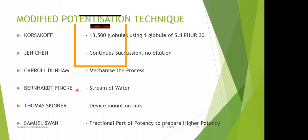Thomas Skinner developed a device — a smaller one which can be mounted on the sink — known as automatic potentization. Samuel Swan made the concept that you do not need to prepare each potency individually. You can take a fractional part of one potency to prepare a higher potency. For example, to prepare 10X, from 1X you take 0.1 gram and add 9.9 grams of vehicle — thus you have prepared 10X. This is the concept of fractional potency to prepare higher potency, by Samuel Swan.